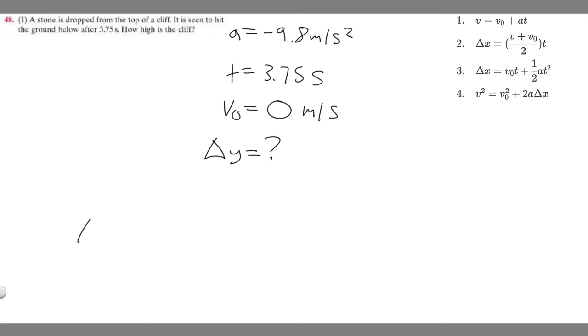Let's go ahead and do that. Delta y equals v sub zero, which is zero, times t, which is 3.75, which is just going to become zero, so I'm going to write it as zero plus one half times a, so a is minus 9.8 meters per second squared, times time squared, so 3.75 squared.